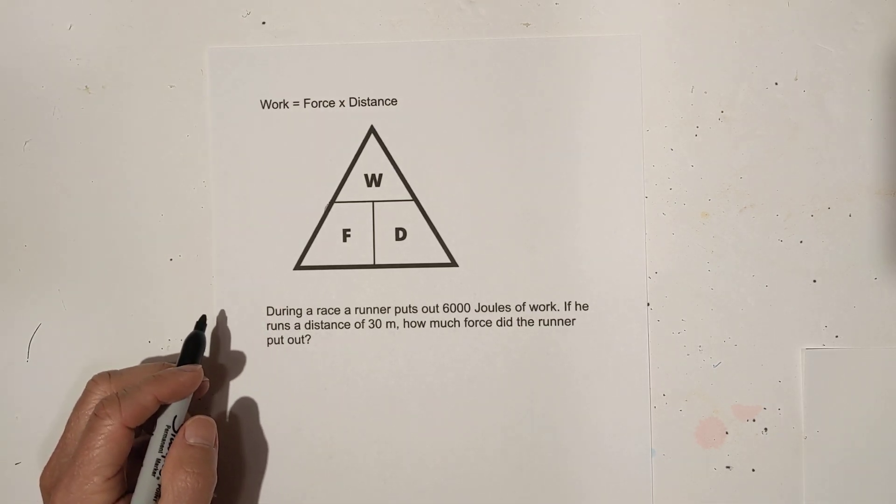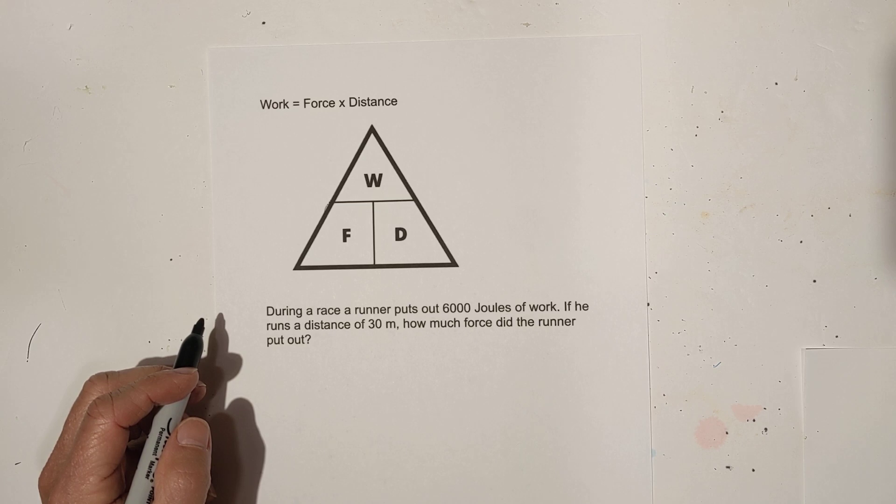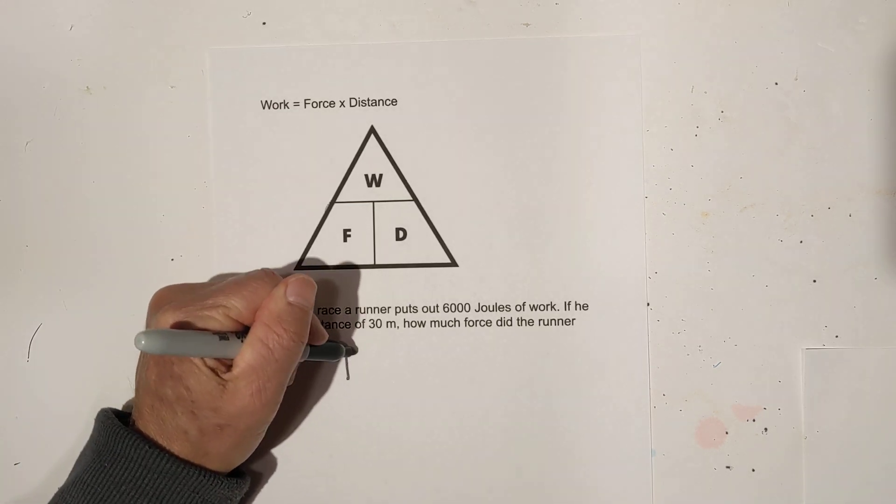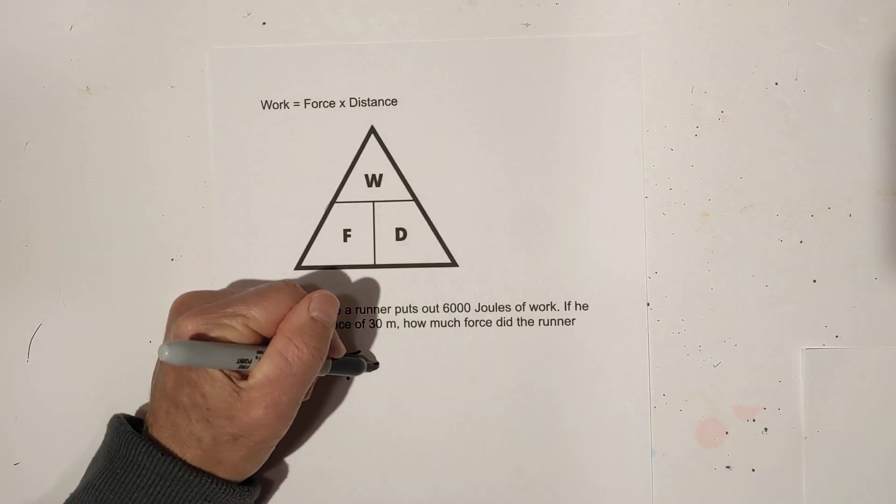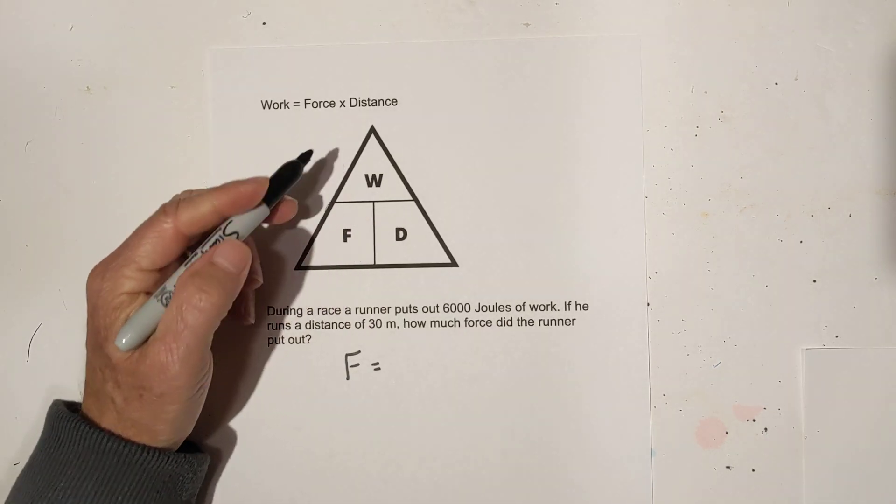During a race a runner puts out 6,000 joules of work. If he runs a distance of 30 meters, how much force did the runner put out? So we're looking for force. Force is equal to work divided by distance.